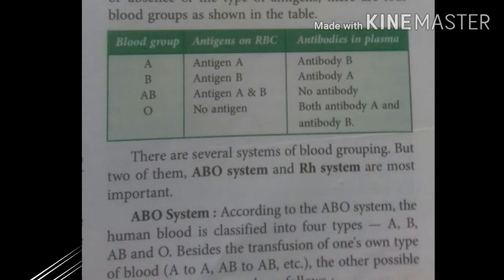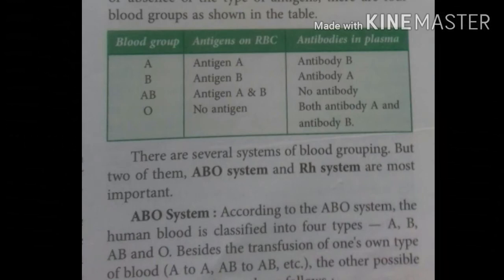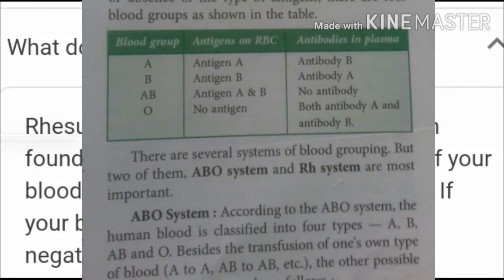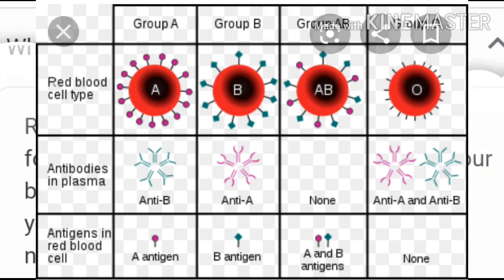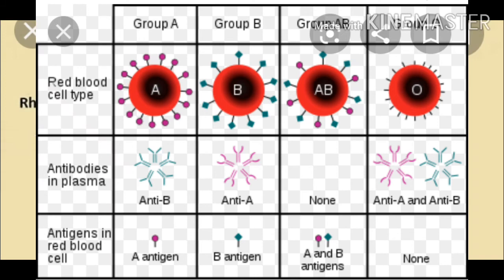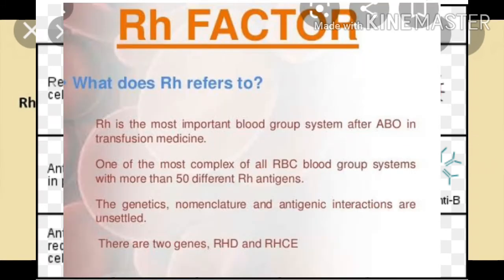There are several systems of blood group, but two of them — the ABO system and the RH system — are the most important. According to the ABO system, human blood is classified into four types: A, B, AB, and O. Besides transfusion of one's own blood type, other possible transfusions can be made. O type blood can be given to persons of all blood types — O, A, B, and AB — and hence a person with O type is called the universal donor. A person with AB type can receive blood from all types — AB, A, B, and O — and is therefore called the universal recipient. A person with type A can receive blood from A and O types, and a person with type B can receive from B and O types only.